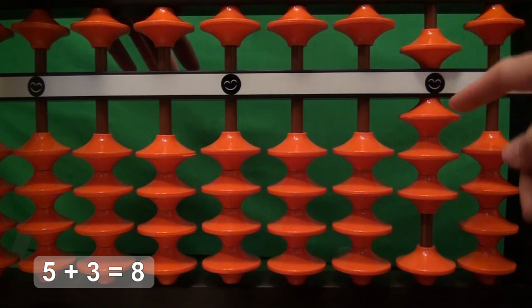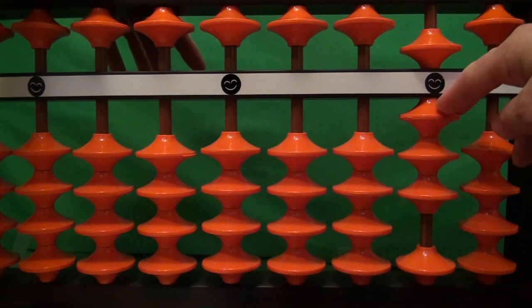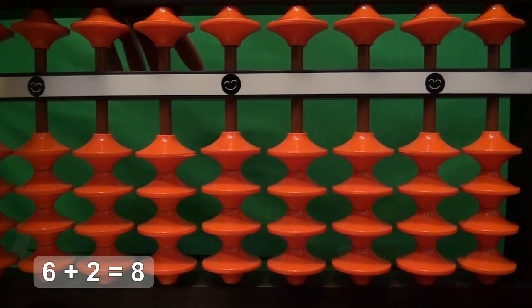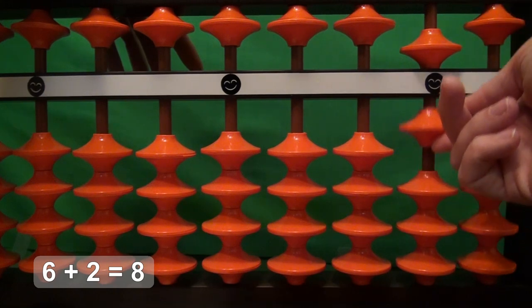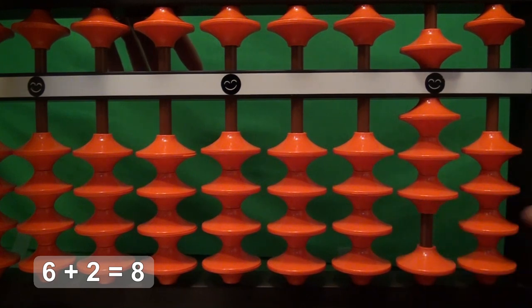Our next problem is six plus two. Six is a five bead and one bead—that's our six—and to that we add two, so we take two of the lower beads. Six plus two equals eight.